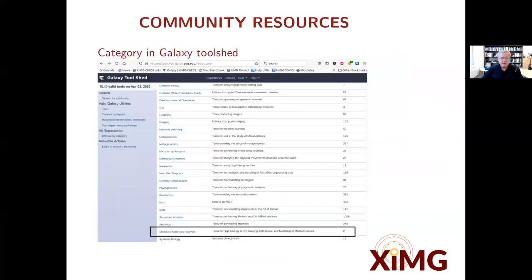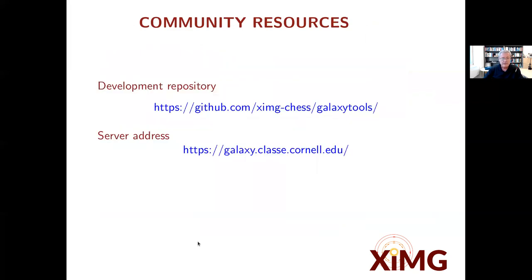We are contributing what we do in terms of community resources. There's a new category in the Galaxy toolset called Galaxy Structural Materials — that's already there, though not many tools are available yet. There is a development repository on GitHub which you can access. And of course, there is the server address, which is also running for those that might be interested in accessing it.